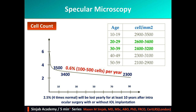Any intraocular surgery, with or without IOL implantation, will add 2.5 percent loss per year. Therefore, taking into consideration the life span, the minimum endothelial cell count should be 2,800 to 3,000 if the candidate is in the third decade, and 2,500 to 2,800 if the candidate is in the fourth decade of life.